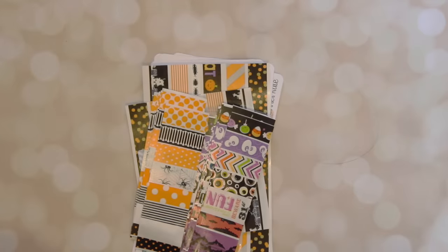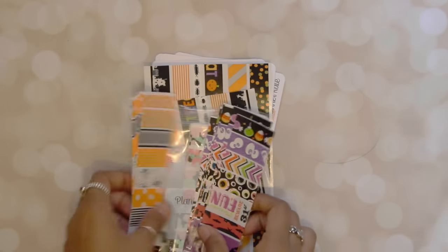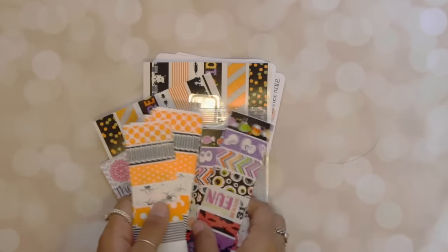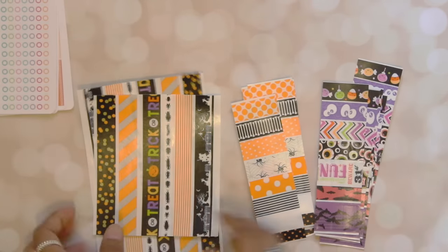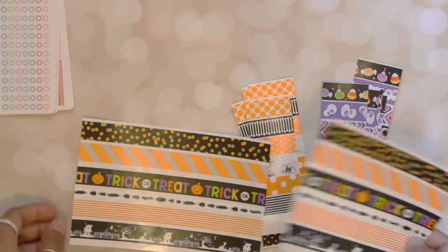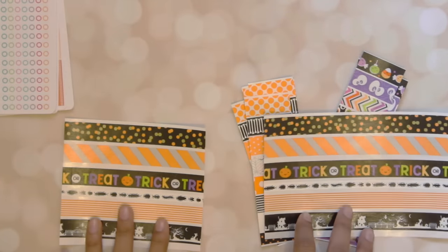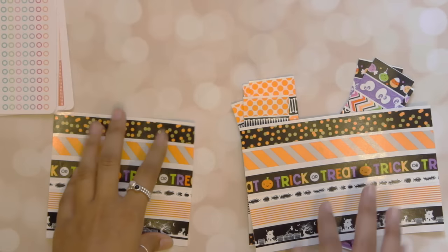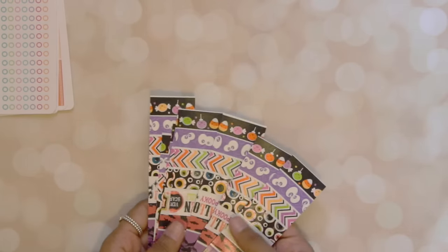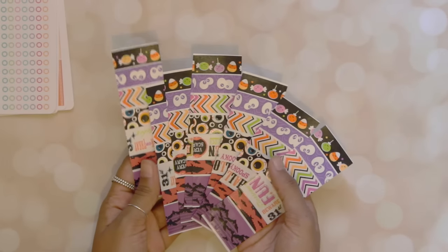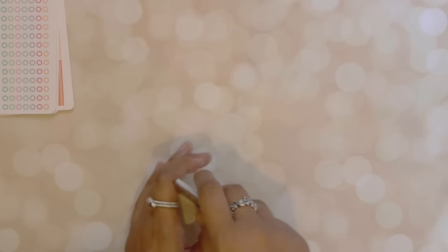Okay, next up I've got Planner K, and I've picked up quite a few things from her. So firstly, I picked up her October washi set. You get these strips for the bottom of the Erin Condren. This is for the left side and this is for the right side. Then you get these, and these which are more Halloween themed. Well, they're basically all Halloween themed, but they're really cute so I'm excited to use that.